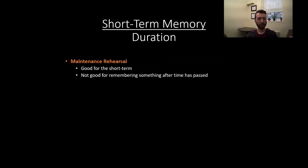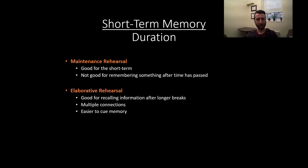So maintenance rehearsal is good for the short term. It's not great for remembering things after the time has passed. So just sort of remembering that information, repeating it in your head over and over again, it's going to keep it active in your short term memory, but doesn't really help you recall things that well later on. Whereas elaborative rehearsal is good for helping you to recall things after longer breaks. This is because of the multiple connections. Connecting Washington didn't fight in the War of 1812. That's a rich sort of memory to encode. You might be able to picture it or have some sort of a rich way of encoding that. The more connections you make with what you're trying to remember and things that you already know, the easier it is to remember them later. It gives you more cues to use to recall that information.